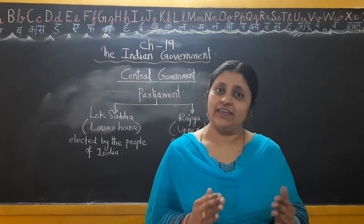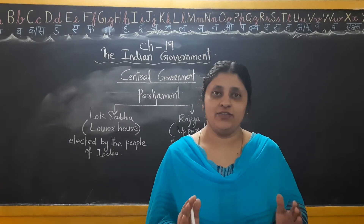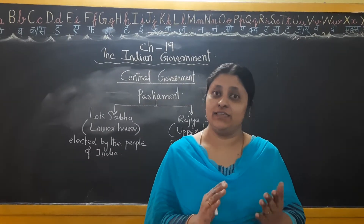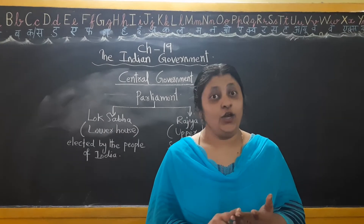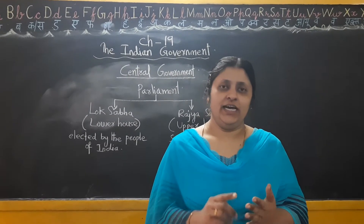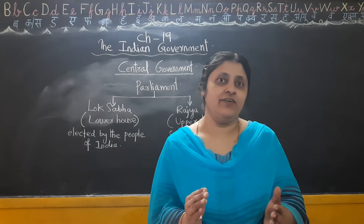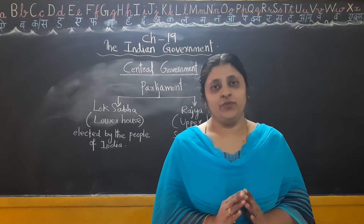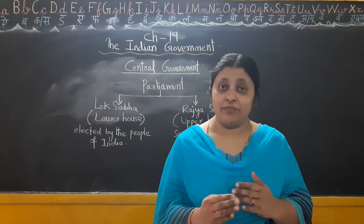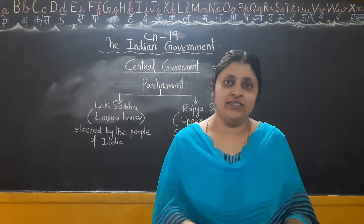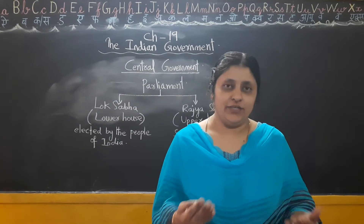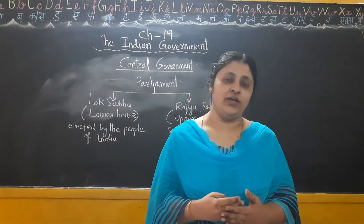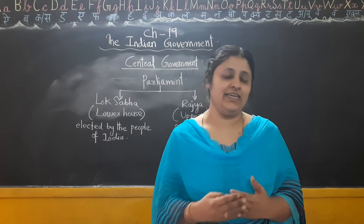We already learnt in class 4 about the three levels of government: central government, state government, and local self-government. You learnt in detail about the local self-government in class 4. So in this chapter, we are going to learn about the central government and the state government.